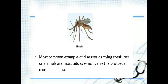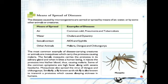The mediums by which disease can spread are air, water, sexual contact, and other animals such as insects. By air, diseases like common cold, pneumonia, and tuberculosis may spread. By water, the diseases might be cholera and dysentery. By sexual contact, the diseases might be AIDS and syphilis. By other animals, the diseases might be malaria, dengue, and chickenpox. The most common creature that transmits disease from the infected person to a normal person is the mosquito — malaria, typhoid, dengue, and chikungunya are transmitted by mosquitoes.